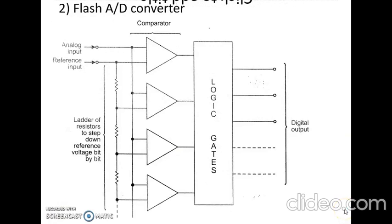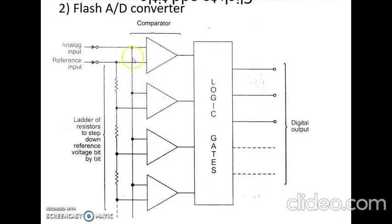Now let us look at the second type: the flash analog-to-digital converter. The flash ADC is the fastest type of analog-to-digital converter. It consists of separate voltage comparators connected in parallel, each having the analog input voltage — the voltage to be converted into digital form — as one of its inputs.